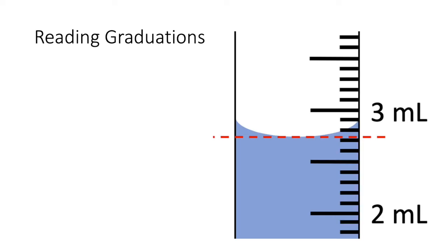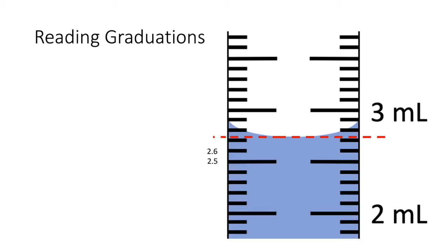In this example, you have a solution in a piece of glassware, and the graduations look to be 0.1 milliliters. There are 10 graduations between the 2 milliliter and the 3 milliliter marks.